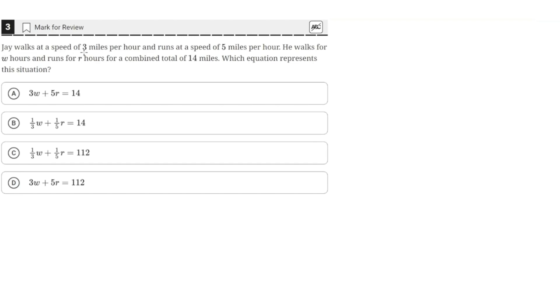J walks at a speed of 3 miles per hour and runs at a speed of 5 miles per hour. He walks for W hours and runs for R hours, for a combined total of 14 miles. Which equation represents the situation?